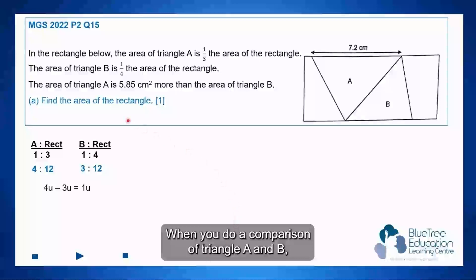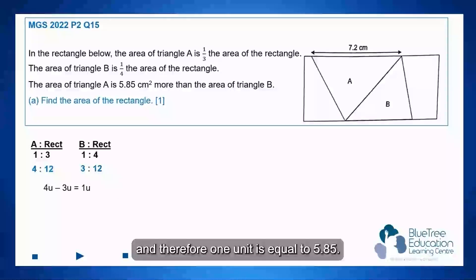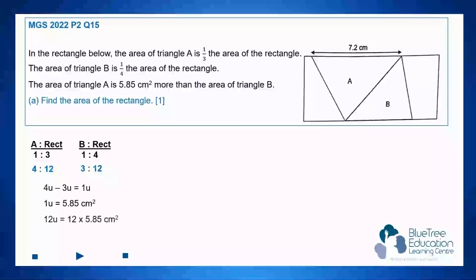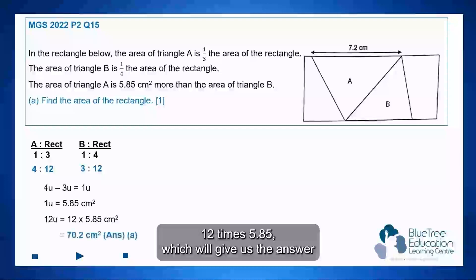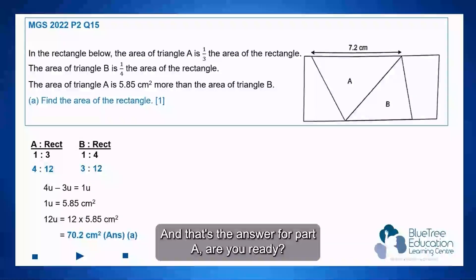When you do a comparison of triangle A and B, take a look at 4 units and 3 units, it's a difference of 1 unit, and therefore 1 unit is equal to 5.85. To find the area of the rectangle, which is a total of 12 units, we'll take 12 times 5.85, which will give us the answer 70.2 square centimeters. And that's the answer for part A.